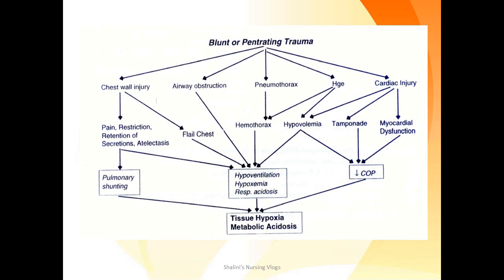Blunt or penetrating trauma can cause a variety of pathological changes, ranging from chest wall injury and airway obstruction to cardiac injury. The connecting link in most of these cases is hemothorax, where blood accumulates in the pleural cavity. These patients present with hypoventilation and tissue hypoxia, leading to lactic acid buildup and eventually acidosis.